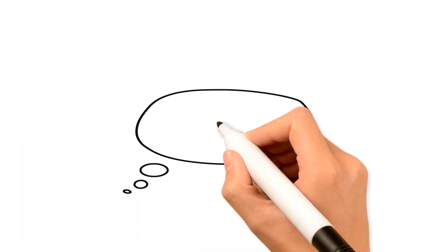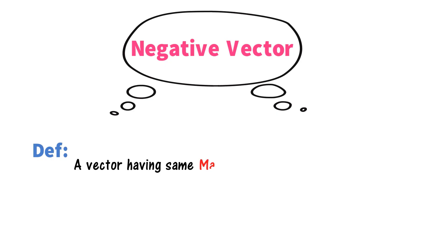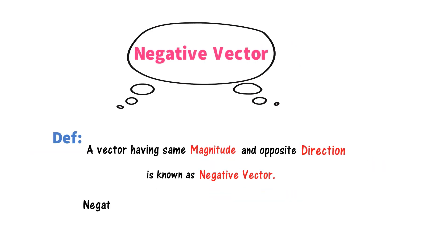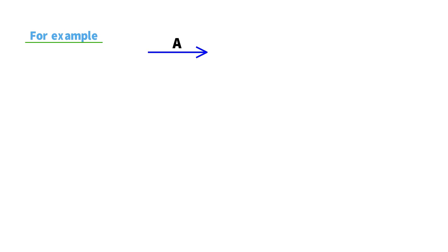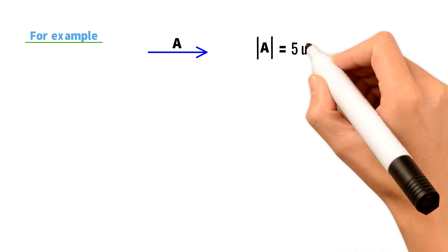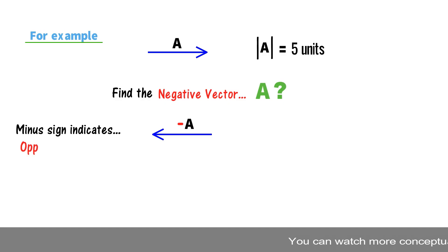Before telling you about vector subtraction, let me tell you about negative vector. The definition of negative vector is: a vector having the same magnitude and opposite direction is known as a negative vector. Negative vector is also known as an additive inverse. For example, if I have a vector a in this direction with magnitude 5 units, to find the negative vector of a, I will just change the direction of vector a to get minus a. Remember, the minus sign indicates the opposite direction.